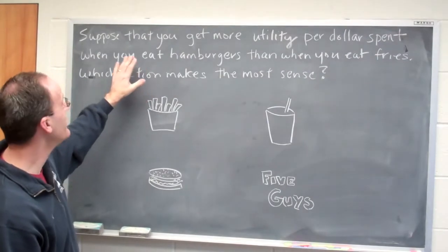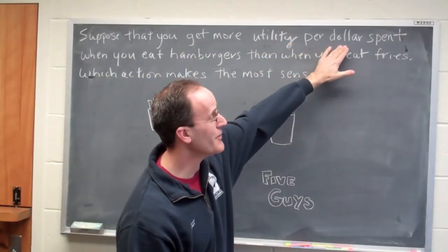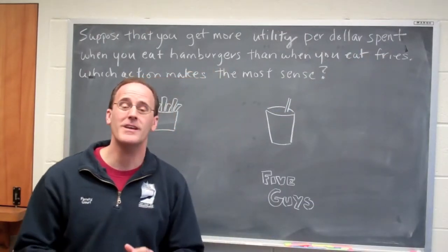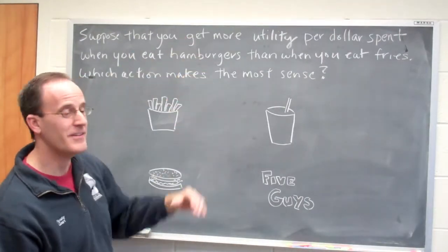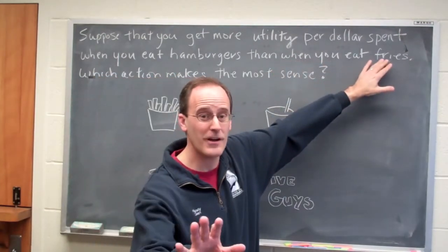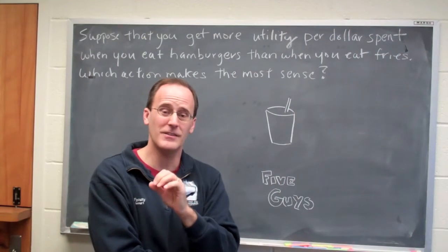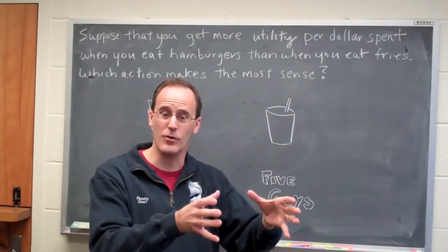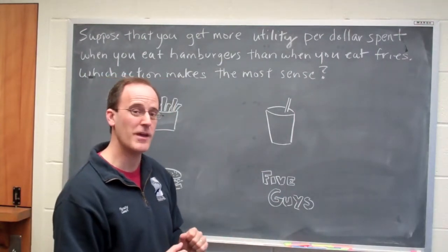Let's look at the question again. You get more utility per dollar spent — why is that important? When you eat hamburgers, the enjoyment you get on a per dollar basis is greater than the enjoyment you get on a per dollar basis from the fries. It tells us that we've factored in the price of the hamburger being a little bit more expensive than the fries, but you still get more enjoyment from the hamburgers.